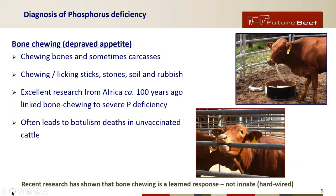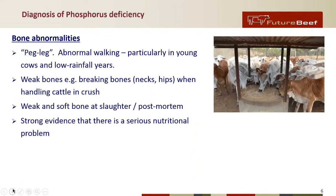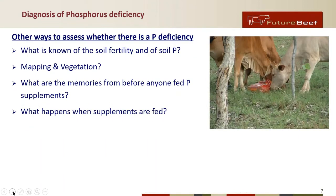Recent research has shown that bone chewing is a learned response, not innate. Rob and his crew demonstrated that at Brian Pastures — hence that photo there of bones in a tub. This work was done under license and controlled conditions to see how animals react when phosphorus deficient or not deficient when given access to bones. Physical abnormalities — obviously a lot of people are familiar with 'peg leg' — are pretty good evidence of a serious nutritional problem. In more extreme cases you can get bone fractures when animals are being handled in crushes, and sometimes when being butchered or at post-mortems you can see damage to joints and soft bones generally.